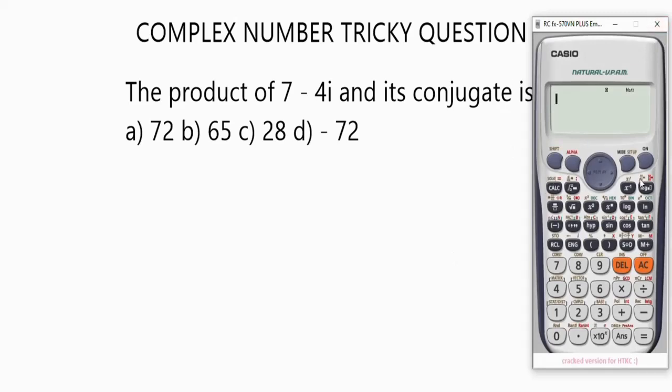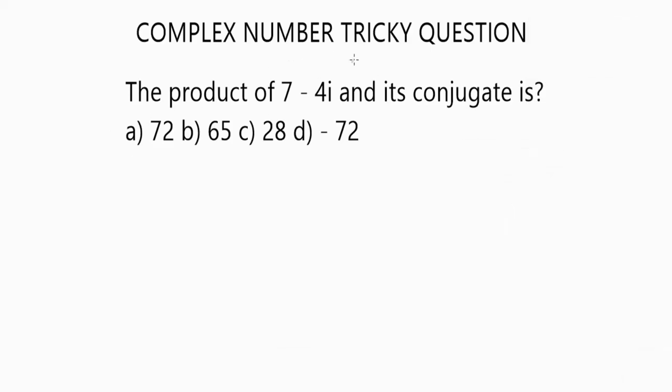This is the Casio FS and ES Plus scientific calculator. Let's read the equation first. It says the product of 7 minus 4i and its conjugate is what? Let me bring the calculator and show you.